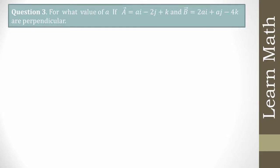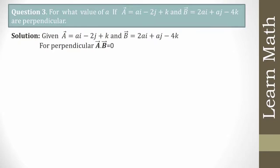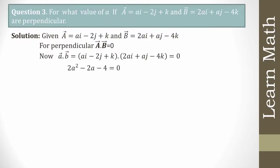Next question: for what value of 'a' are vectors a and b perpendicular? For perpendicular vectors, a·b = 0. Using this condition: (ai - 2j + k)·(2ai + aj - 4k) = 0. Multiplying the i, j, and k components gives: 2a² - 2a - 4 = 0.